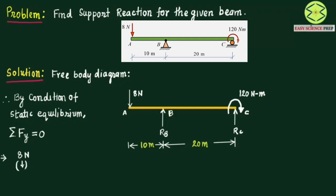We can see here an 8 Newton force acting downward. Following our sign convention, downward forces are taken as negative and upward forces as positive. RB is acting upward so it will be positive, and RC at point C is also acting upward so it is positive. For summation of forces we do not consider moments. Simplified, this gives us RB plus RC equals 8 Newtons. This is our first equation.